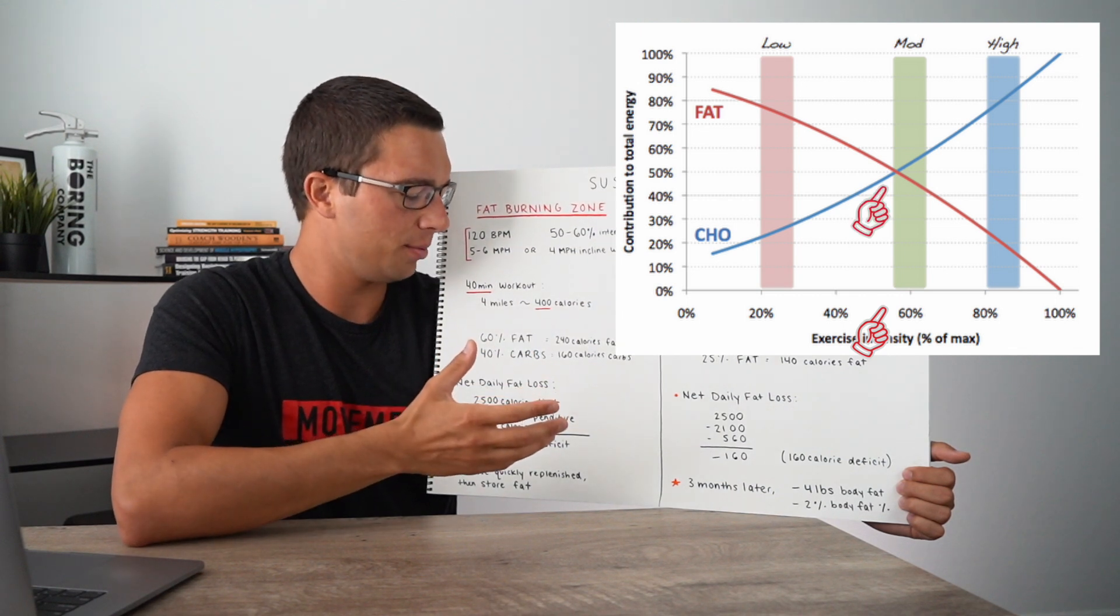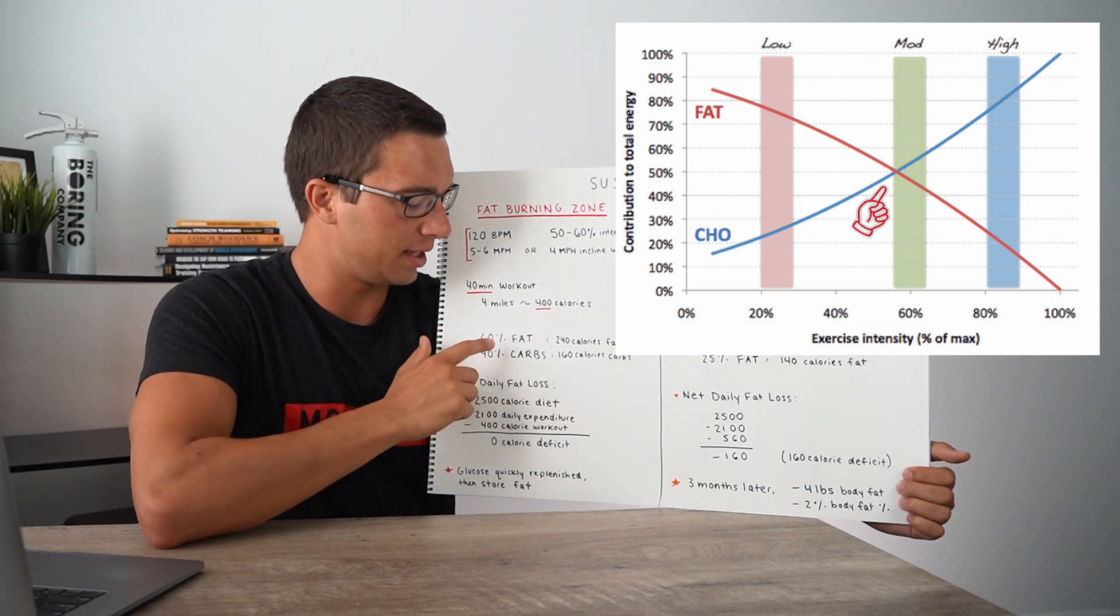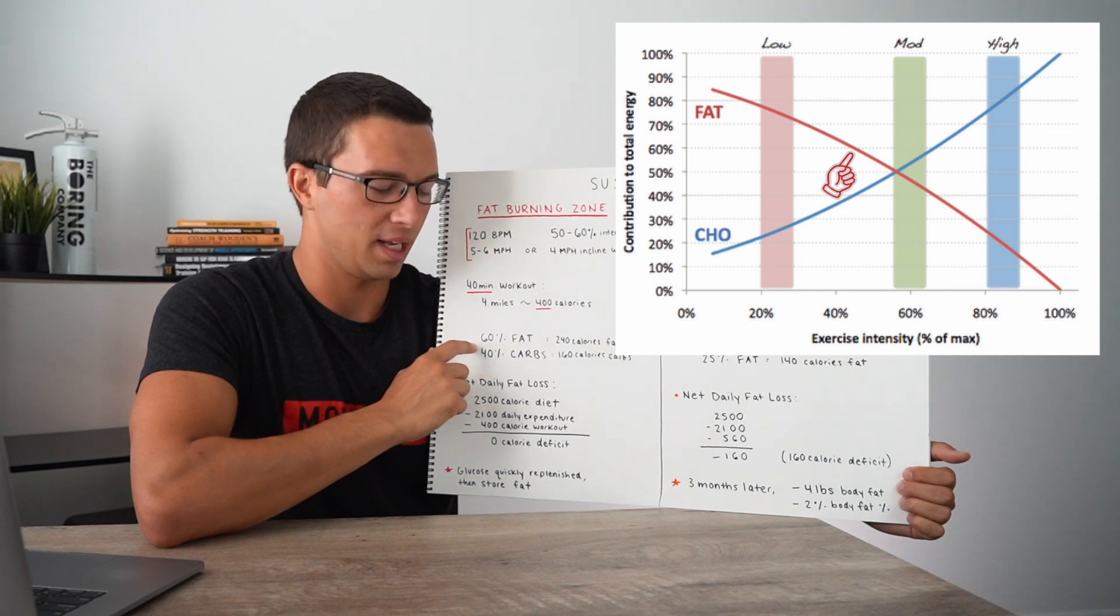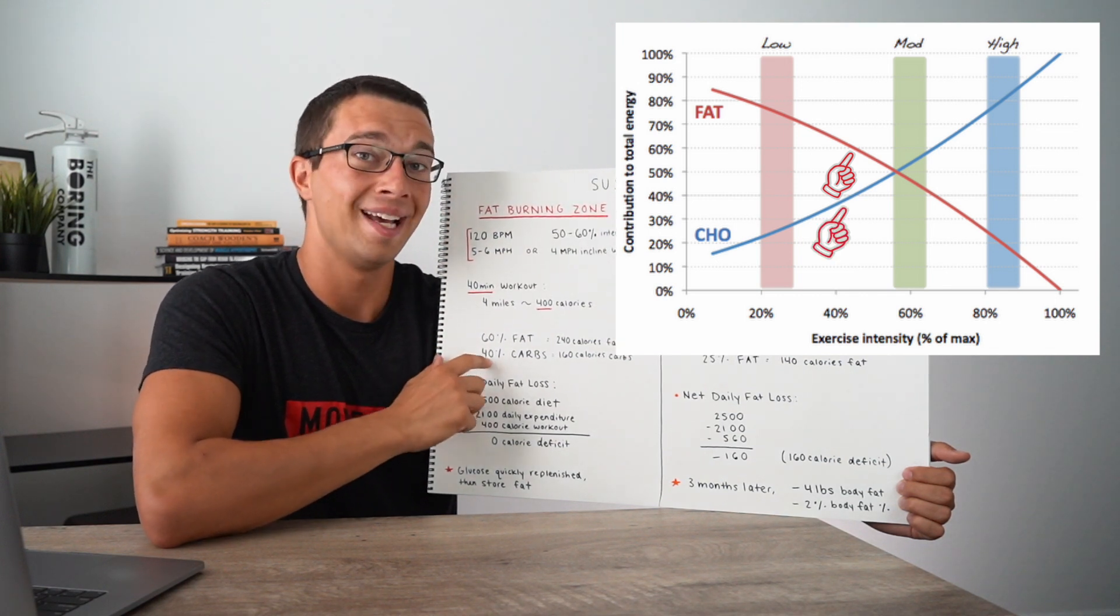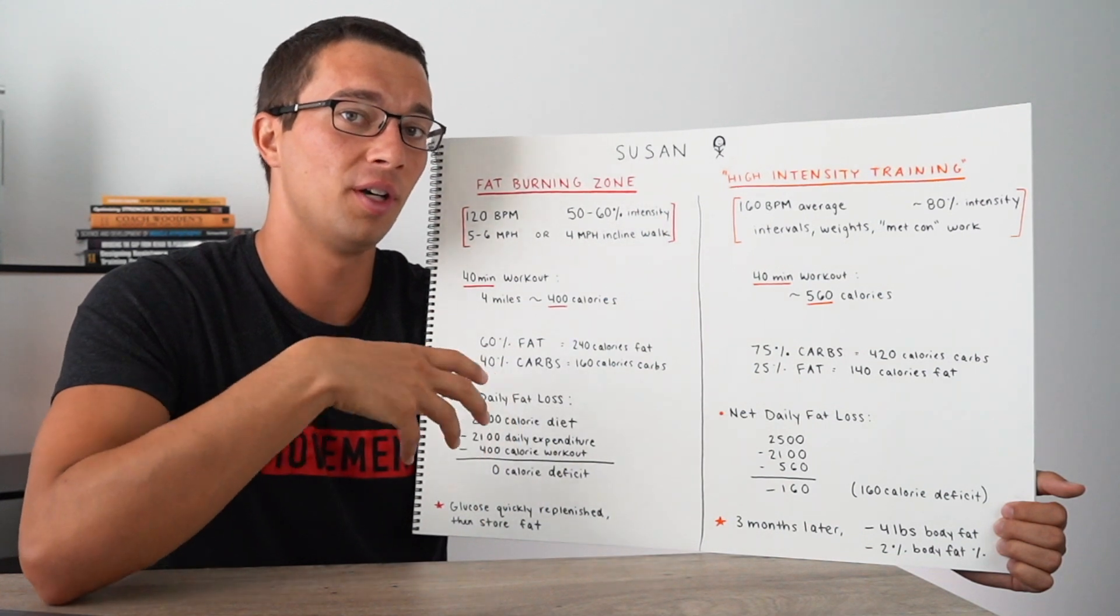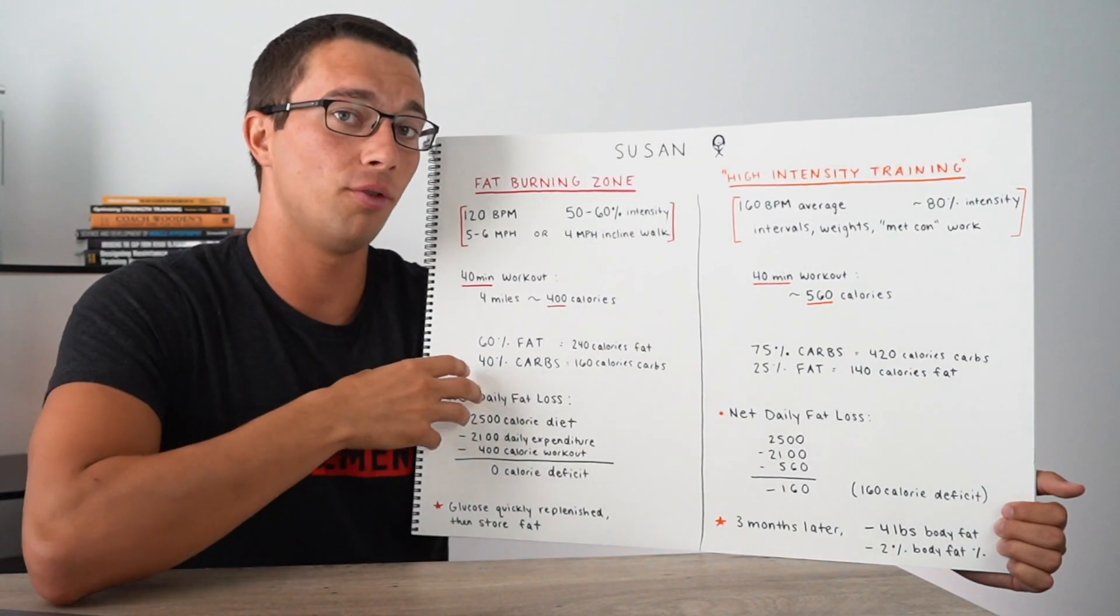So looking at this graph at around a 50 to 60% intensity, she's burning maybe 50-50 carbs fat, but let's give her the benefit of the doubt and say that she's burning 60% fat and 40% carbohydrate. This means that from the 400 calories that she burned, breathing hard and doing that 40 minute workout,